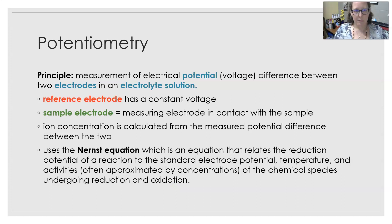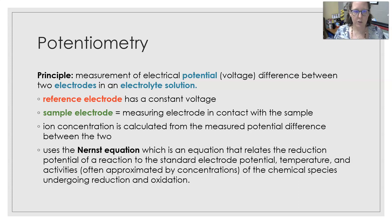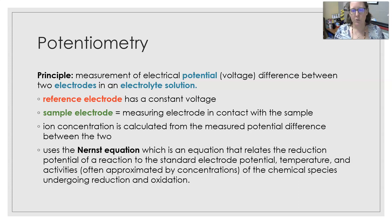The principle of potentiometry is the measurement of electrical potential and voltage difference between two electrodes in an electrolyte solution. The reference electrode has a constant voltage, and the sample electrode is the measuring electrode that is in contact with the sample. The ion concentration is calculated from the measured potential difference between the two electrodes.